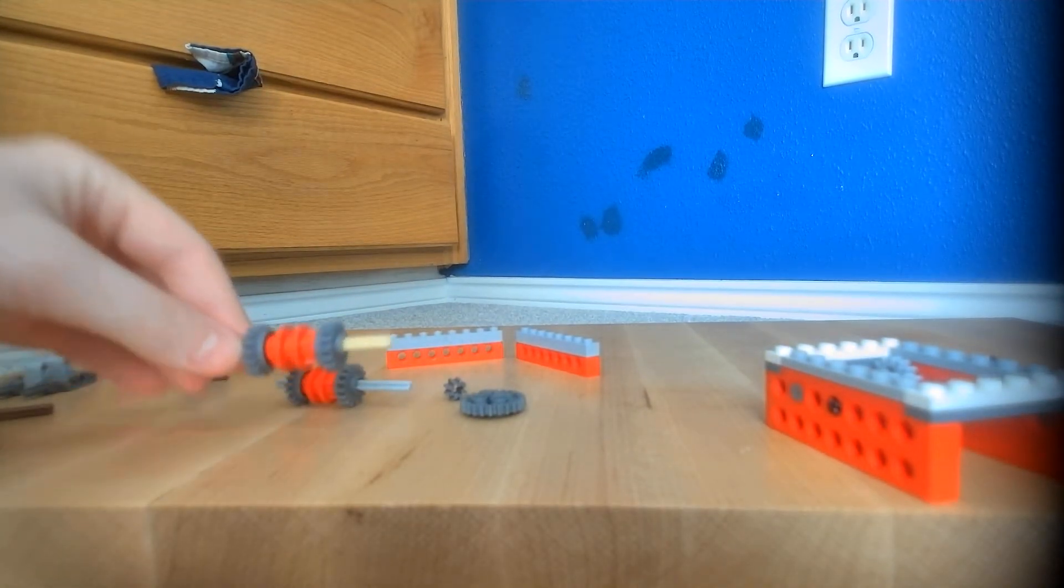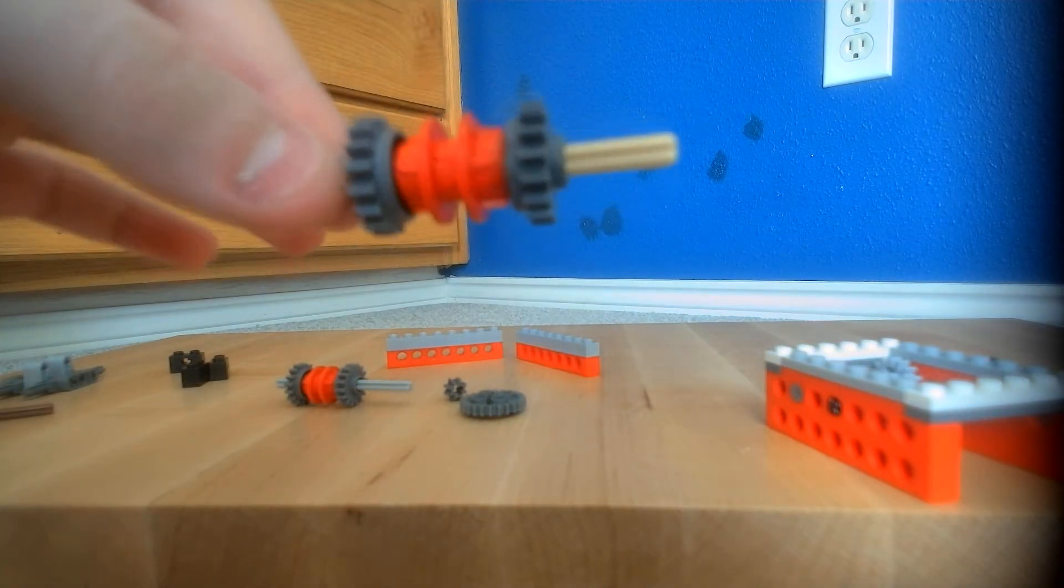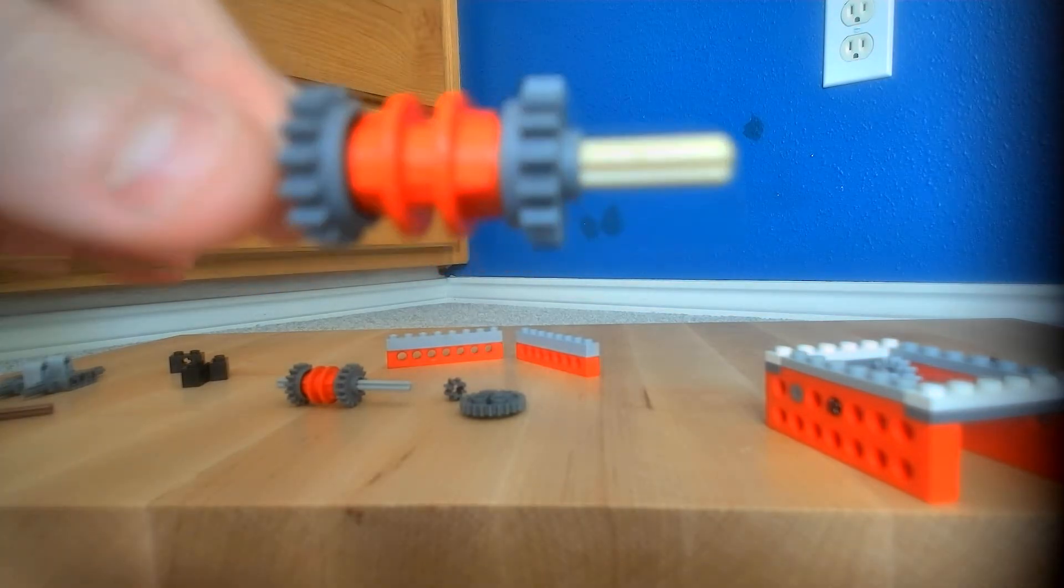So I'm pretty sure you're all familiar with how this clutch gear works. You just have a axle locker in the middle, clutch ring, and two clutch gears. So make those.